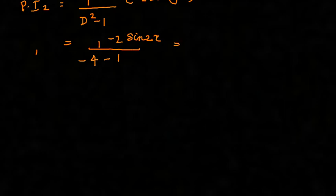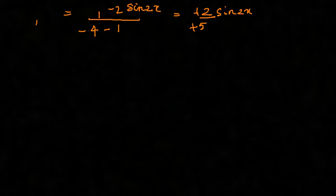So this can be written as minus 2 by minus 5 into sin 2x, which is plain 2/5 sin 2x. Therefore, the general solution can be written as y equals your CF plus PI₁ plus PI₂.